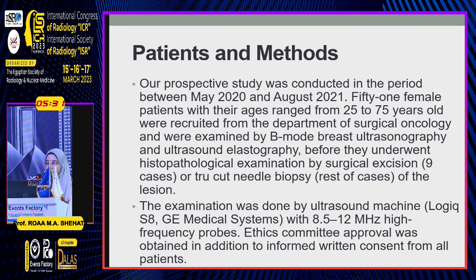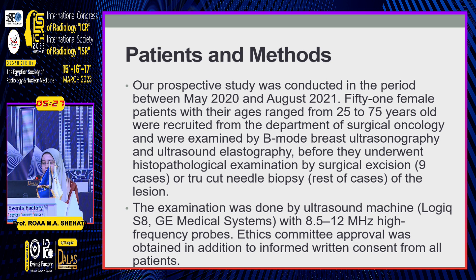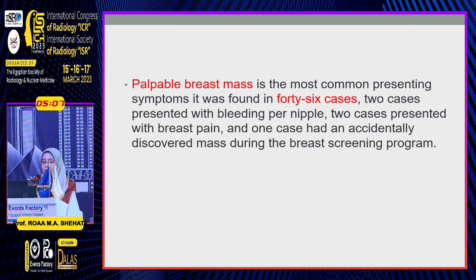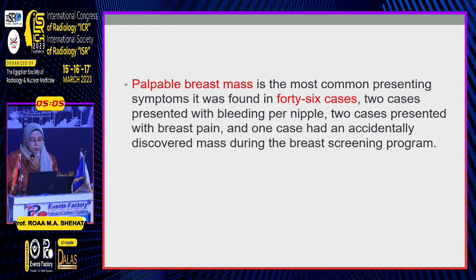Our prospective study was conducted between May 2020 and August 2021. 51 female patients with age range from 25 to 75 years old were recruited from the Department of Surgical Oncology and examined by B-mode breast ultrasonography and ultrasound elastography before they underwent histopathological examination. Palpable breast lump was the most common presenting symptom, found in 46 cases.